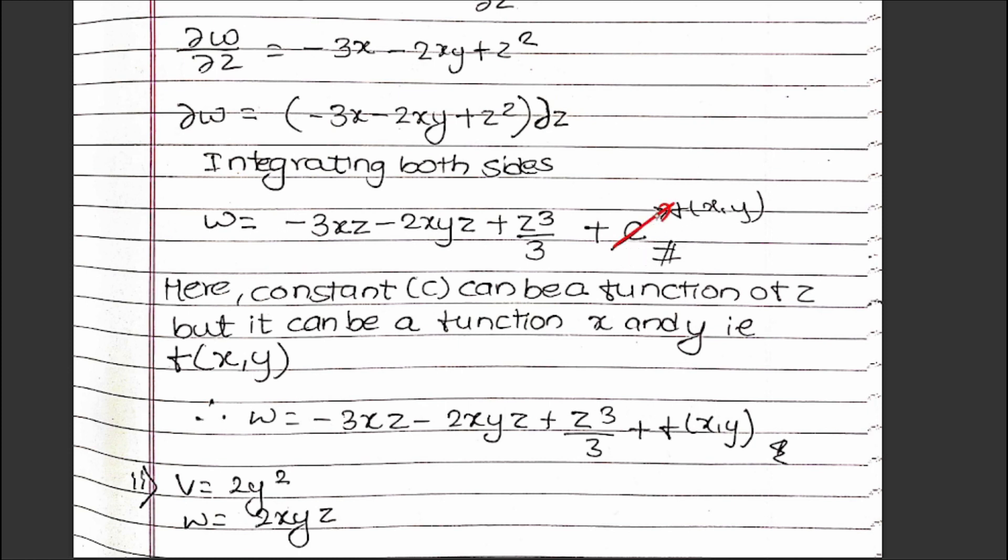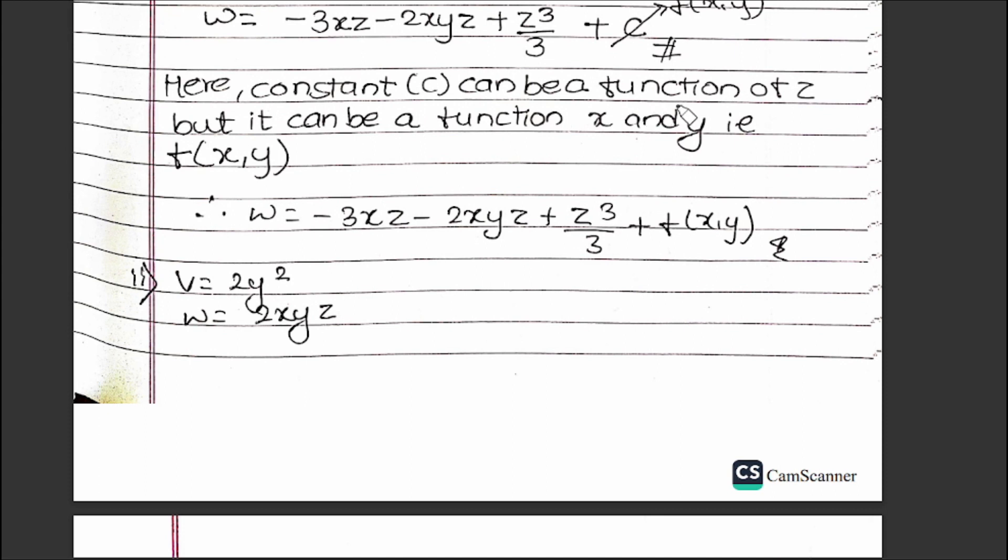The constant of integration C can be a function of x and y. Since we're finding the third component w, the constant can be a function of x and y, that is f(x,y). So w = -3xz - 2xyz + z³/3 + f(x,y). This is the required answer.